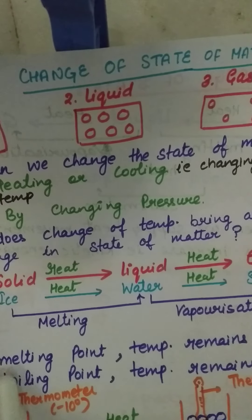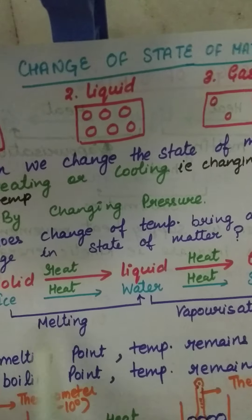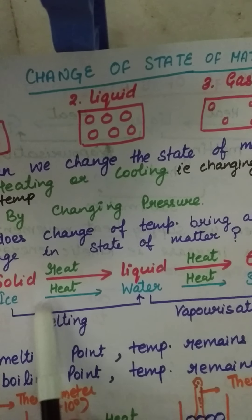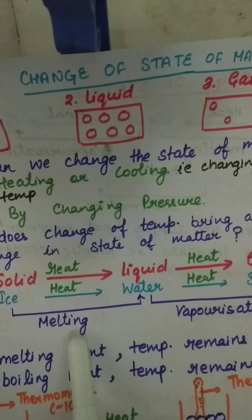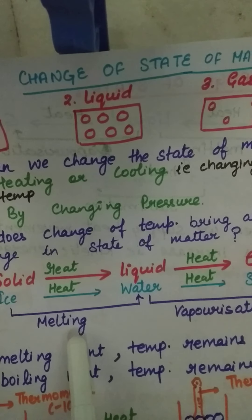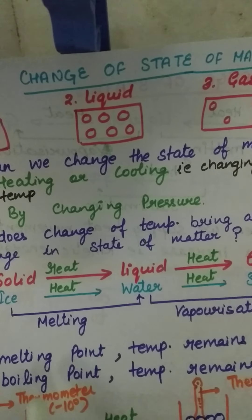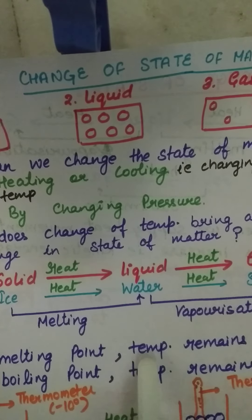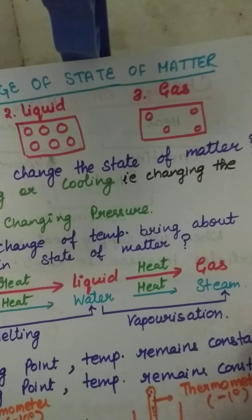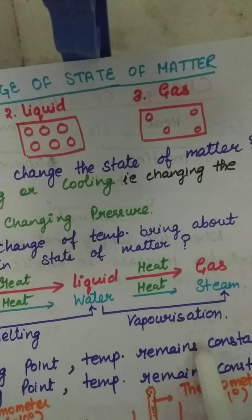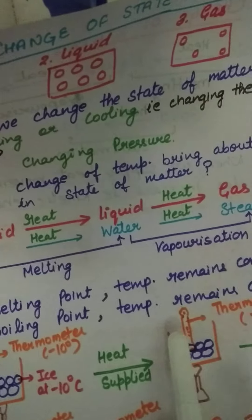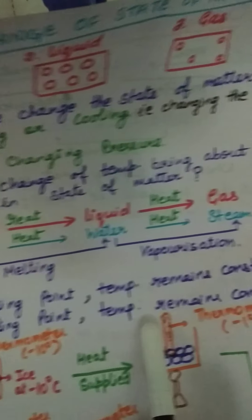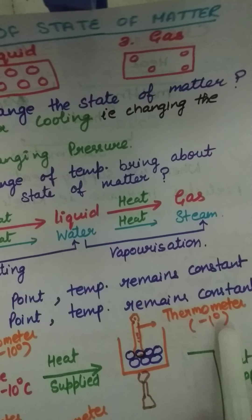There are two important points. When melting takes place, it occurs at a specific temperature. We will discuss which substances have a definite melting or boiling point. At the melting point, temperature remains constant — it does not change. Similarly, at the boiling point, temperature also remains constant and does not change.